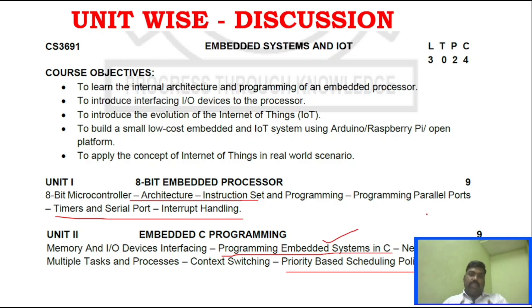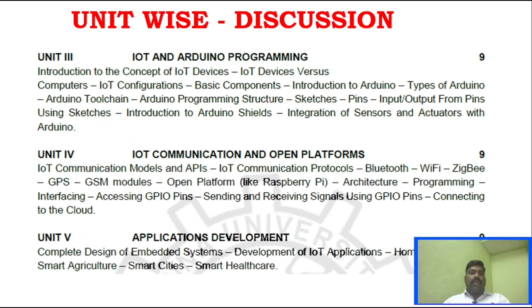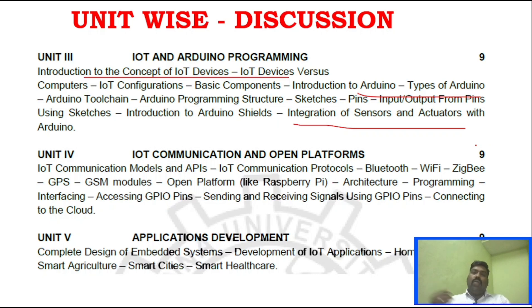Another important thing in this subject: Unit 4 and Unit 5 — 95% of the Part C questions come from that area. Coming to Unit 3, the basics of IoT — what is IoT, basic functions, and components — are important. What is Arduino, what are the types of Arduino, and the integration of sensors and actuators with Arduino are key topics. Scenario-based questions like connecting an LED with Arduino are also covered.